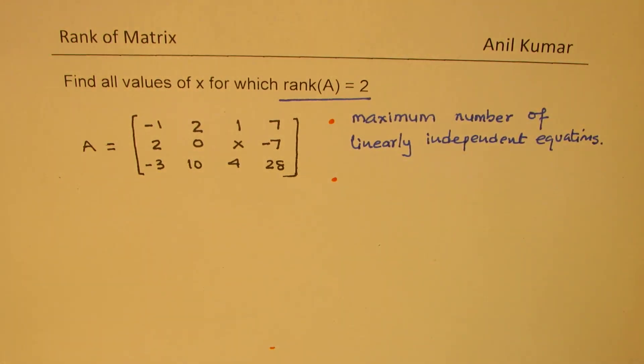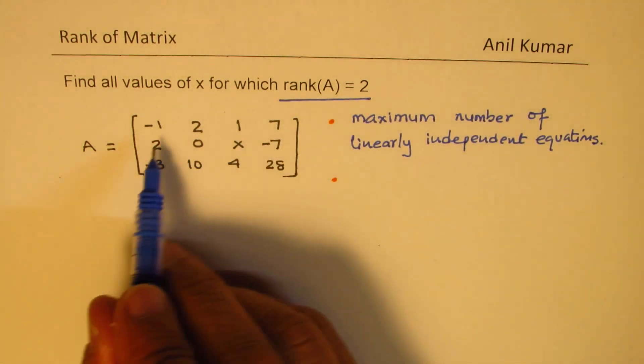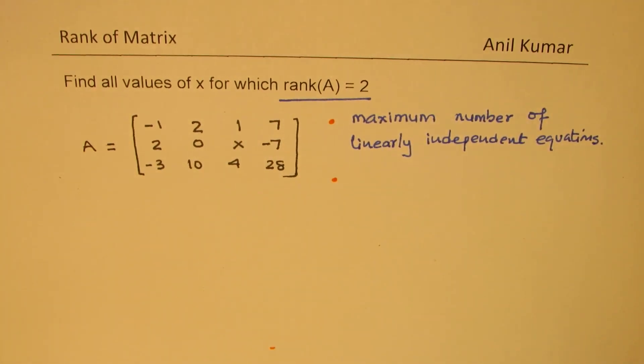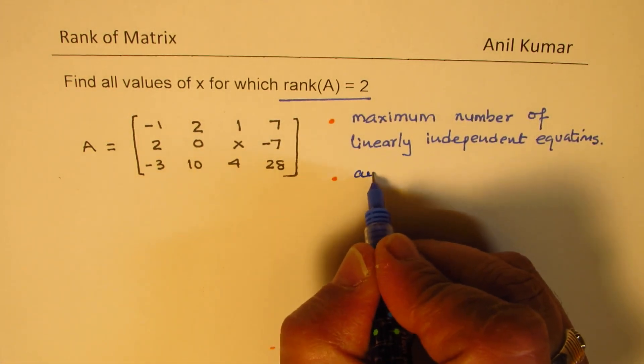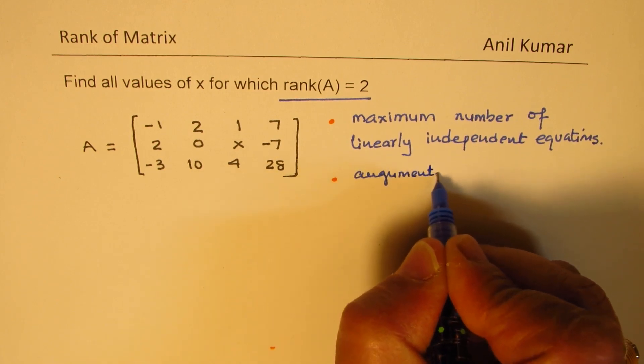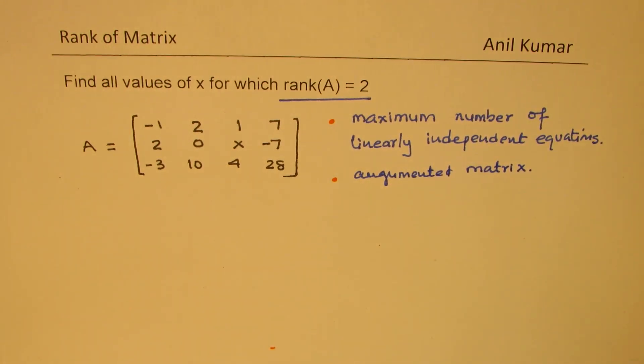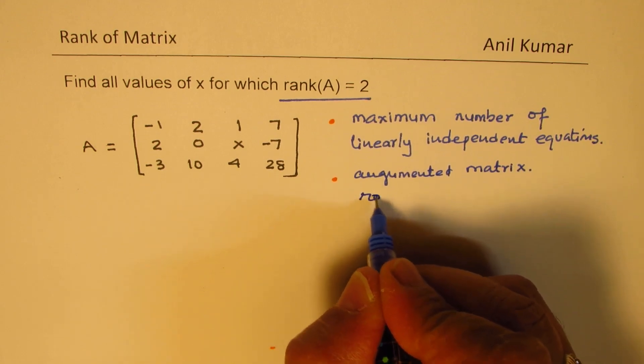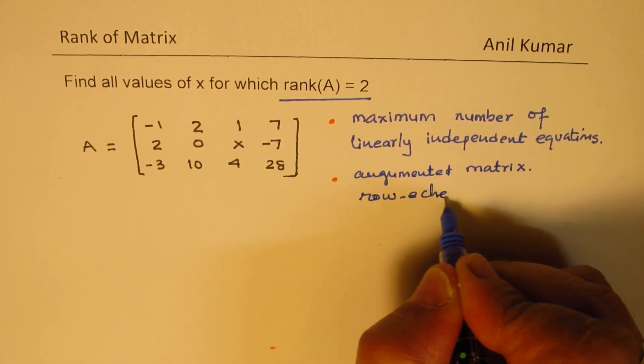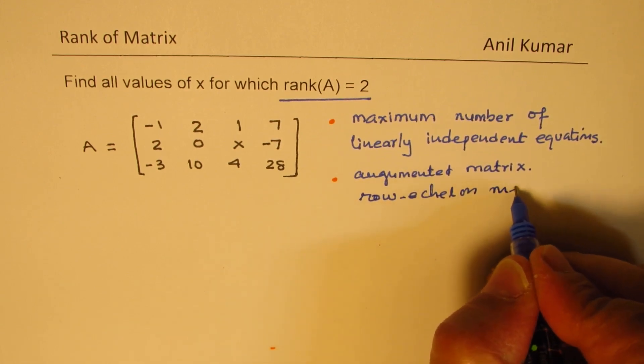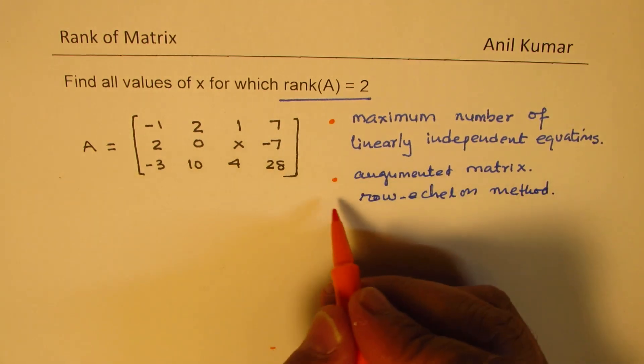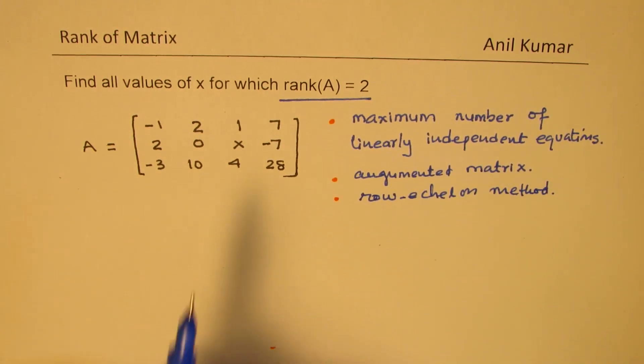How do we figure this out when we have an augmented matrix? We have here a matrix and we need to figure out. This is our augmented matrix. How do we find how many linear independent equations are there in this? The best way is to reduce it using row-echelon method. That's what we are going to do. If you get set of zeros, that means it is dependent.